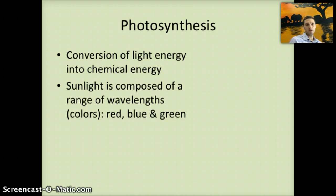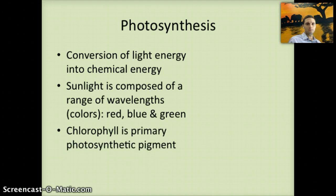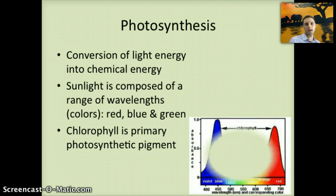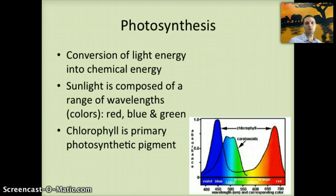Sunlight is composed of a range of wavelengths — red, blue, and green — and this sunlight provides the energy for plants to make their sugars. Chlorophyll is the primary photosynthetic pigment, acting as the receptor for this sunlight. There are different types of pigment, and chlorophyll absorbs red and blue light most effectively. The reason plant material is most often green is because green light is actually being reflected — that's what we see.